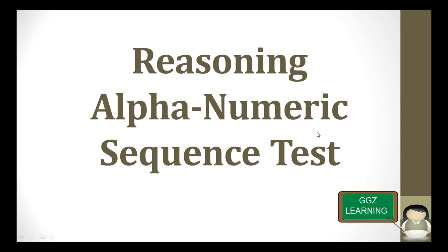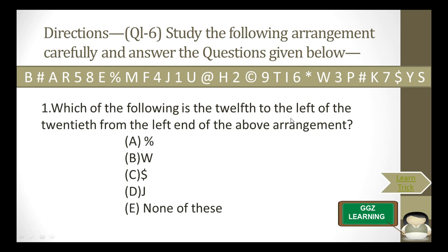Hi, it's Sudhaas from GCN Learning. Today we are going to see Reasoning Alpha Numeric Sequence Test. What they will give is a sequence of numbers, digits and alphabets. In that sequence, we are going to find the relevant answer for the given question. The direction is 1 to 6 — study the following arrangement carefully and answer the question given below.